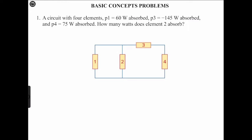Before we start, let's go over something. The passive sign convention is satisfied when the current enters through the positive terminal of an element and the power is positive, or it's satisfied when the current enters through the negative terminal of an element and the power is negative. Also, the conservation of energy must be obeyed in any electric circuit, so the algebraic sum of power in a circuit at any instant of time must be equal to zero.